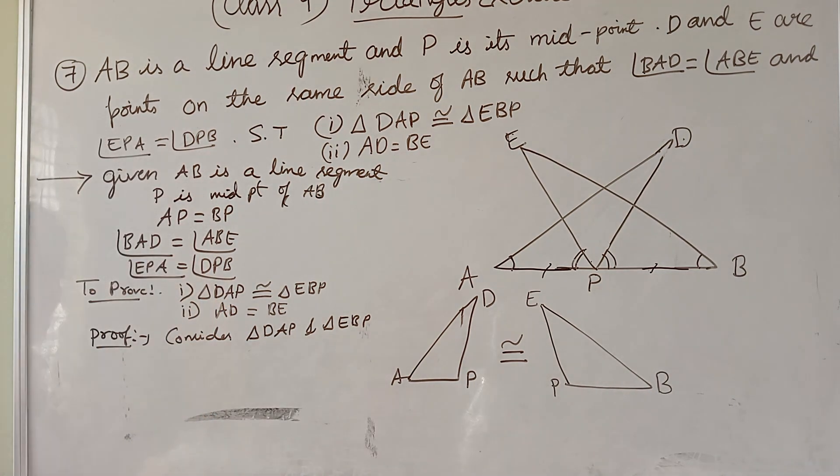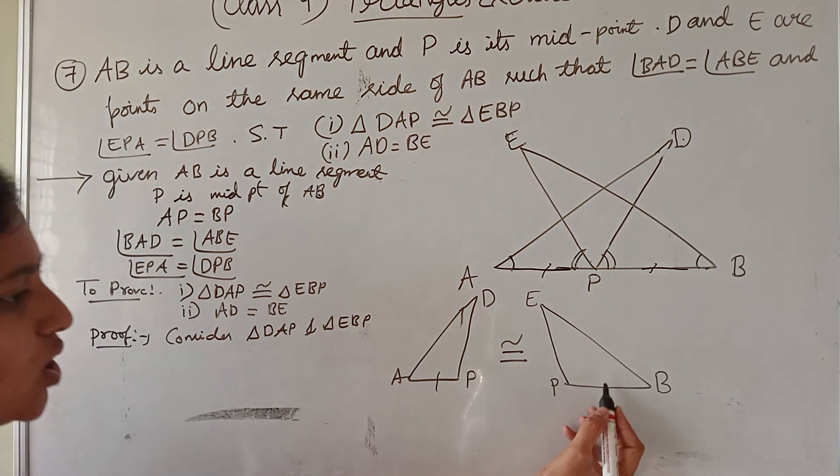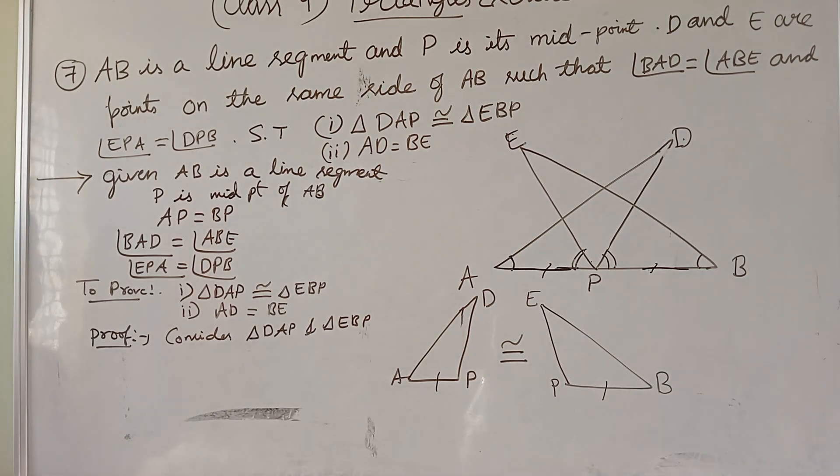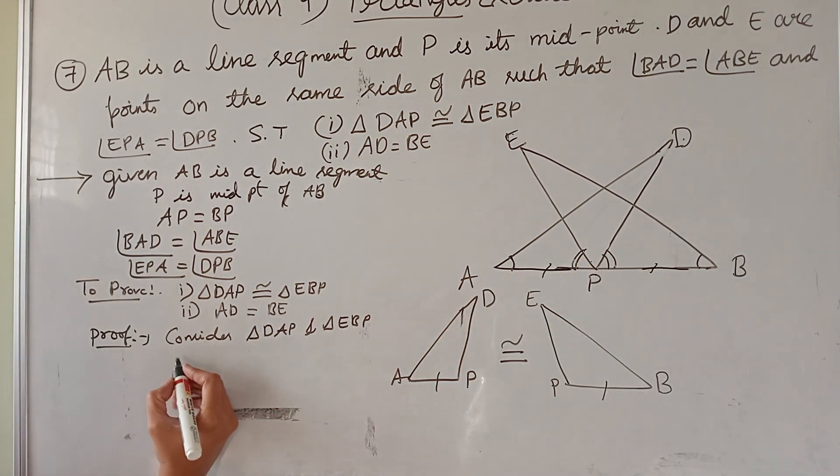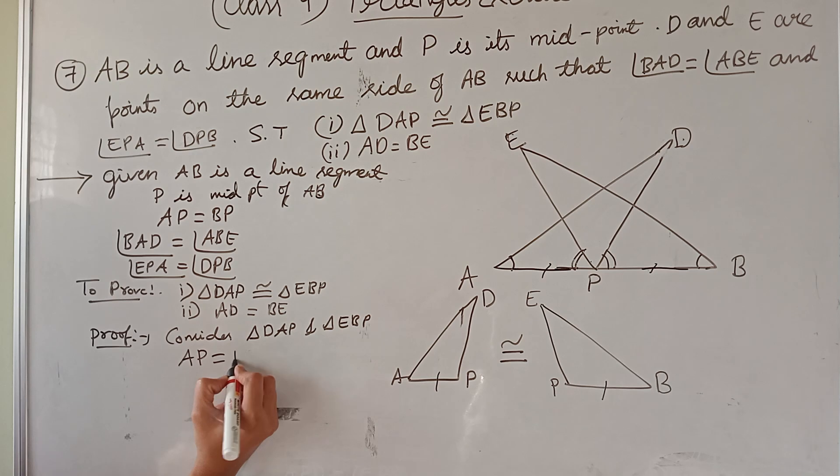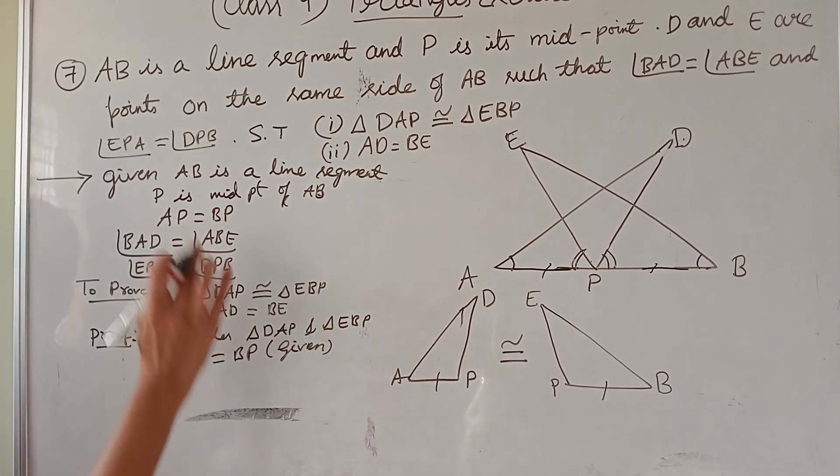First, AP equal to BP. Since it is a midpoint, these two sides are equal because midpoint divides the line segment AB equally. First condition, we will write AP equal to BP. This is given.